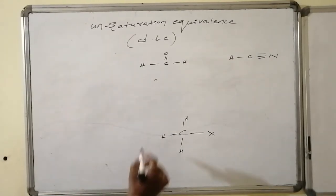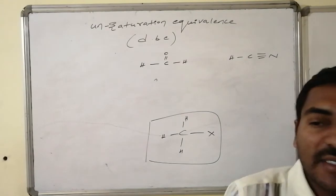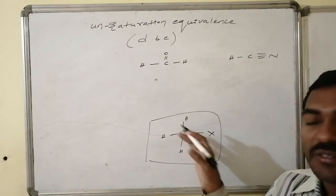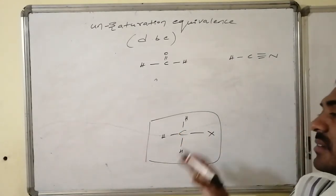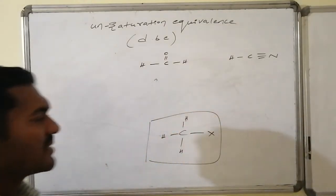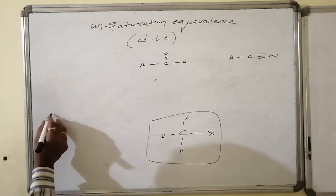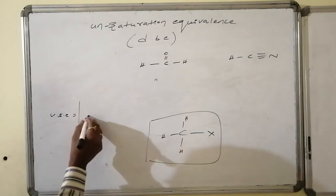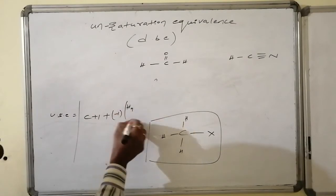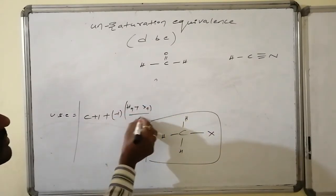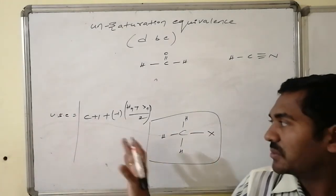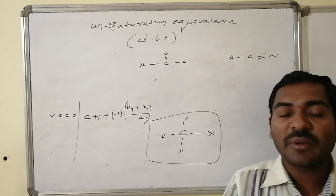When hydrogen is replaced by a halogen atom, the halogen is also monovalent — it forms one single connectivity just like hydrogen. Therefore, halogens can be counted as hydrogen in the formula. The unsaturation equivalence with halogens present becomes: DBE = C + 1 − (number of H + number of halogens)/2.